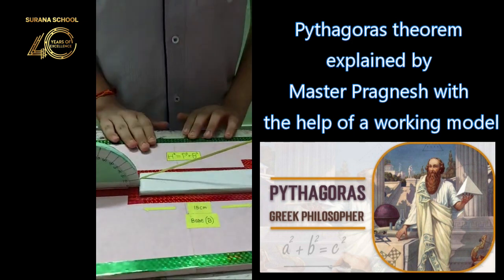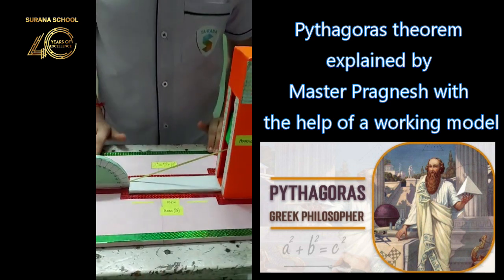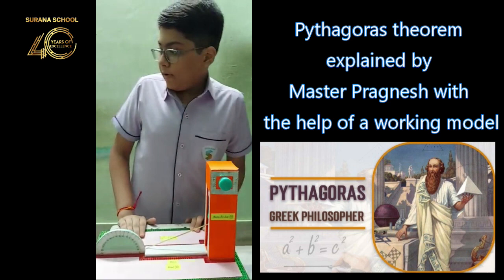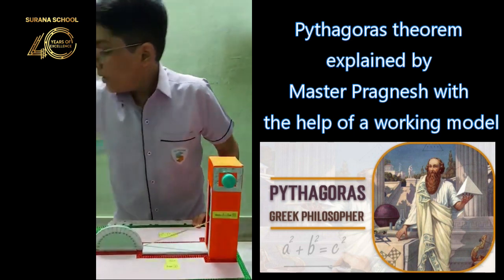By using the Pythagoras Theorem, we can find the hypotenuse by adding the base square and perpendicular square. As you can see, I have done it here.